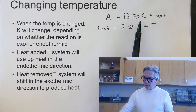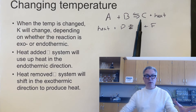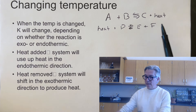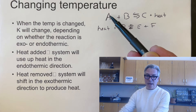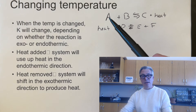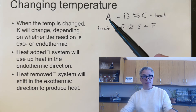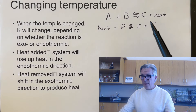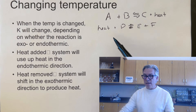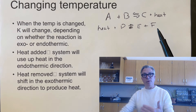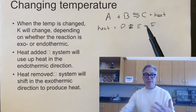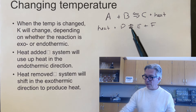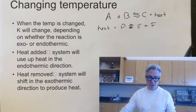If I add heat to an exothermic reaction, the system will shift left to use up some of that heat. If I cool it down, it shifts right to produce more heat. For an endothermic reaction, the opposite occurs: adding heat shifts it right to use up the heat, and removing heat shifts it left.